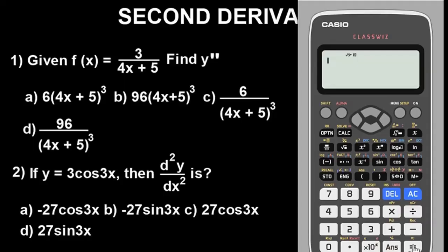Before we proceed, I want to say a few things regarding second derivative and differentiation as a whole. Some examiners use d²y/dx², some use prime notation. For example, in question one we are asked to find — given f equals 3 over (4x + 5) — and the examiner chose to use y double prime. These two strokes on top of the y signify double prime. So y double prime, d²y/dx², and second derivative all mean the same thing. Don't be confused by these symbols.